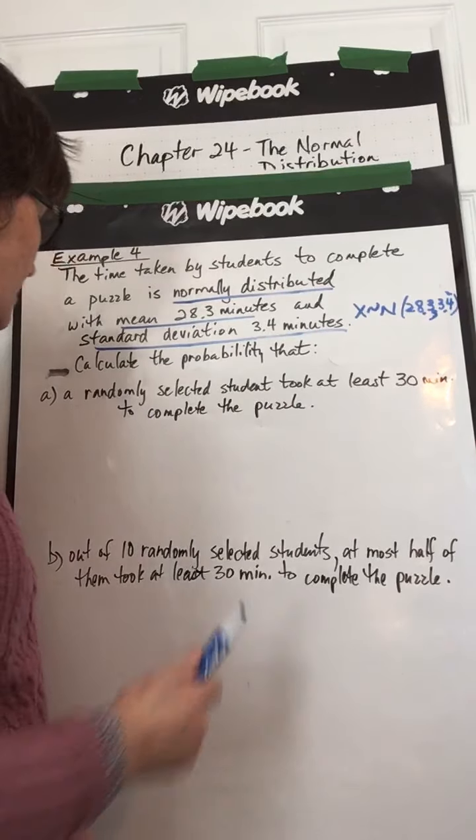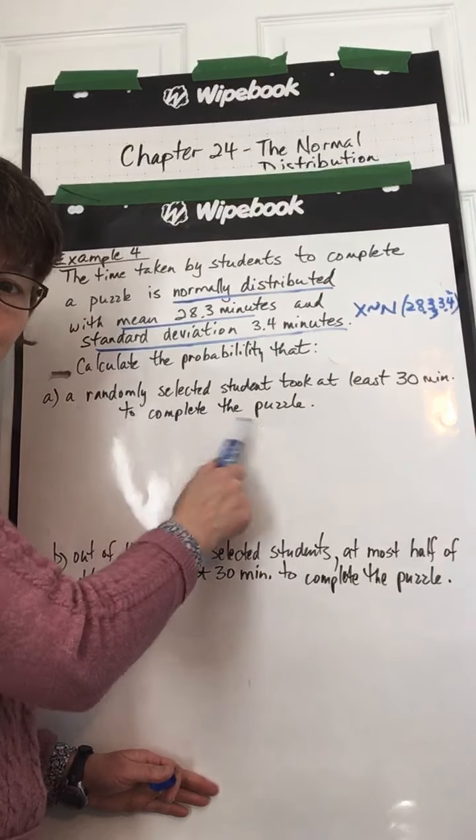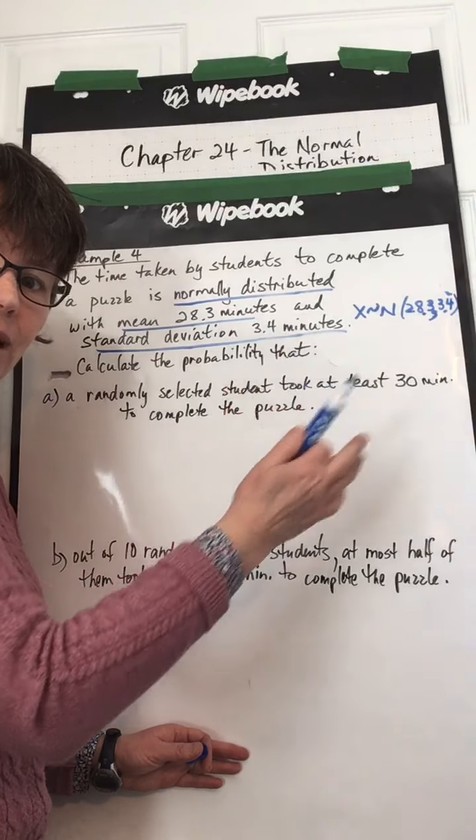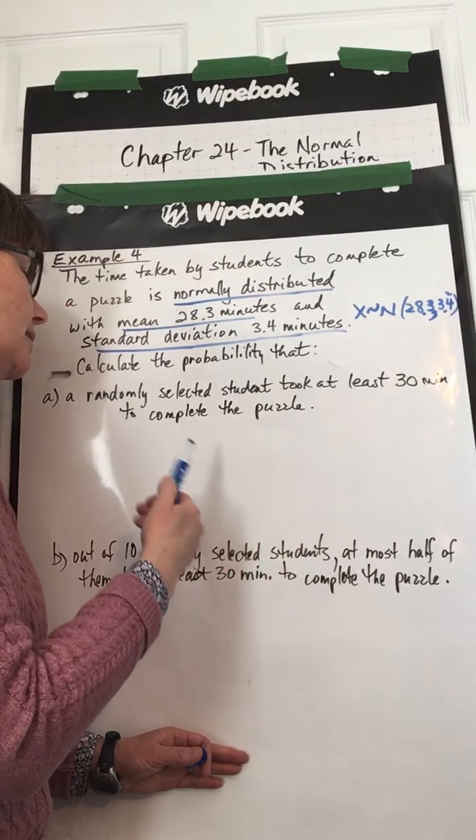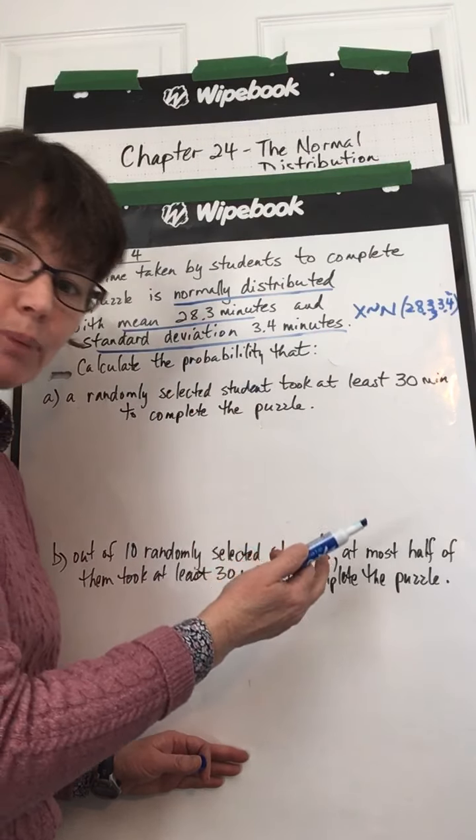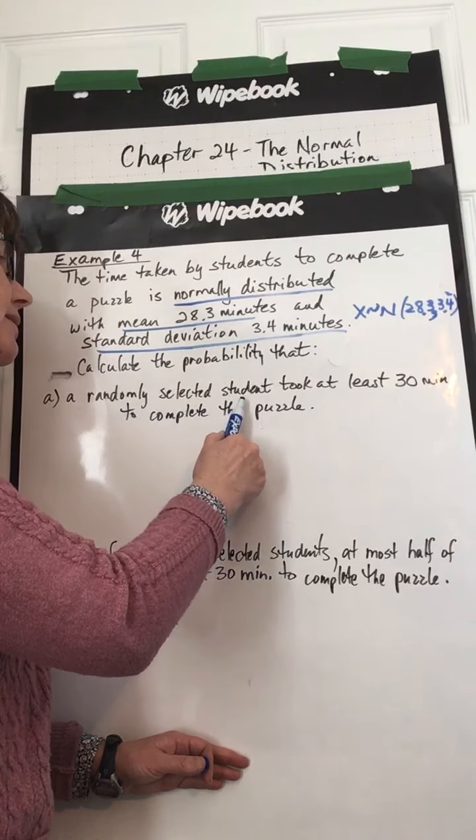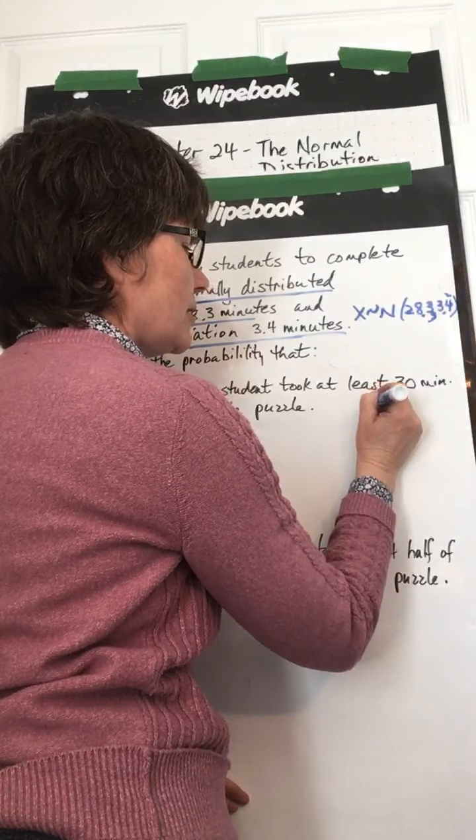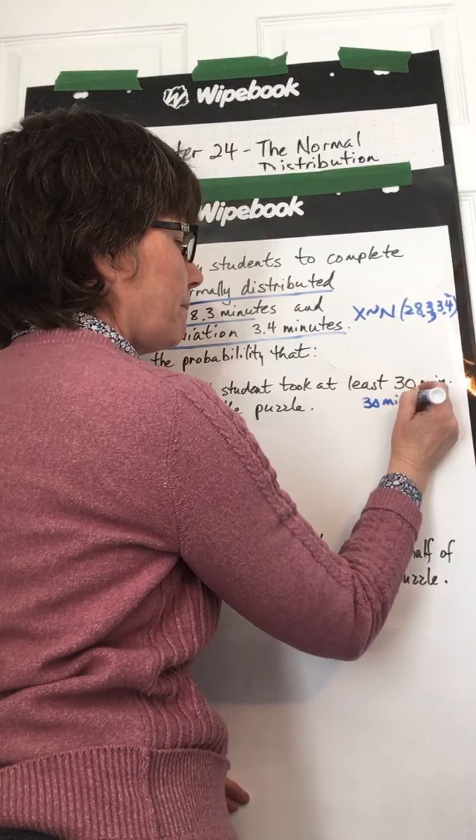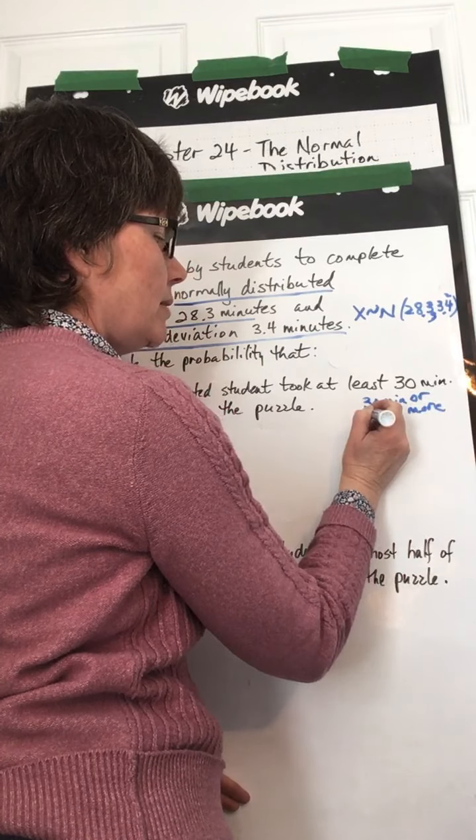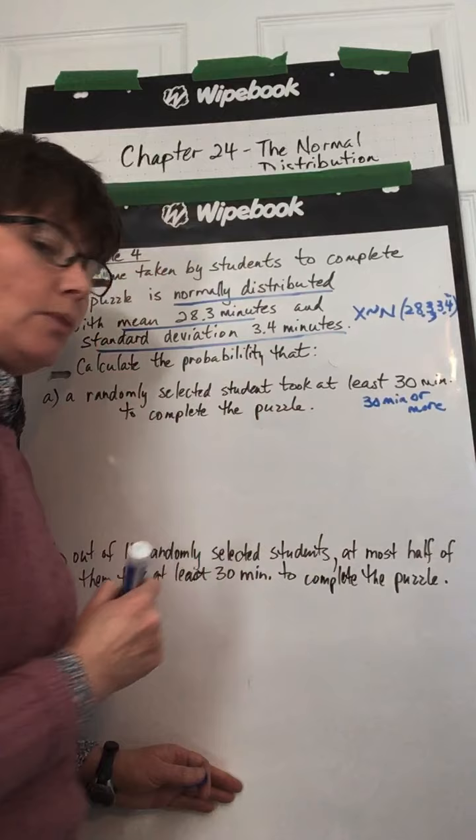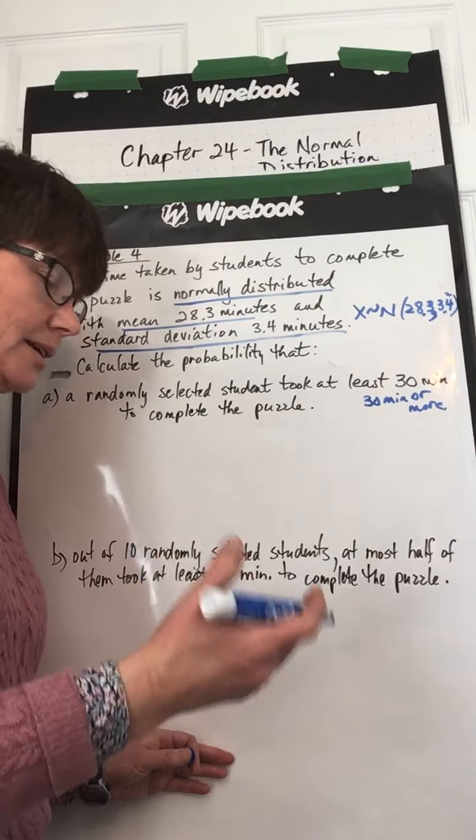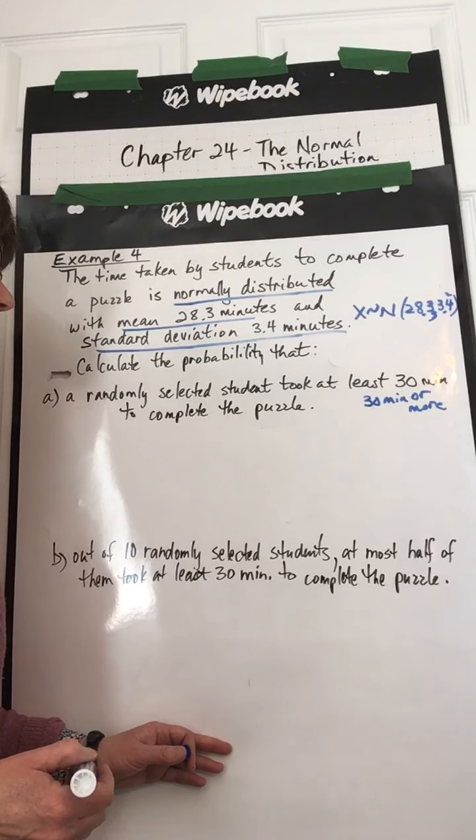Calculate the probability that a randomly selected student, and remember this is important, we're dealing with random variables in chapter 23 and 24, random probability. We want to make sure it's random, it's not rigged, it's not biased. So a randomly selected student took at least 30 minutes, so this means 30 minutes or more, to complete the puzzle.